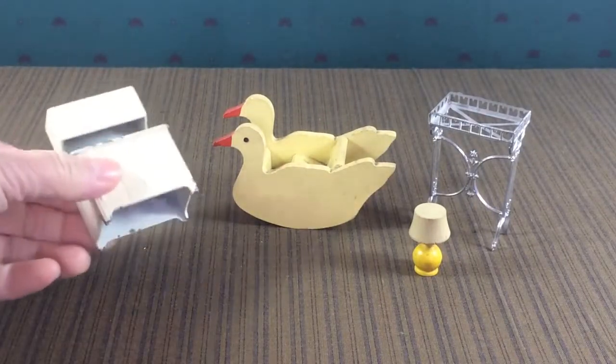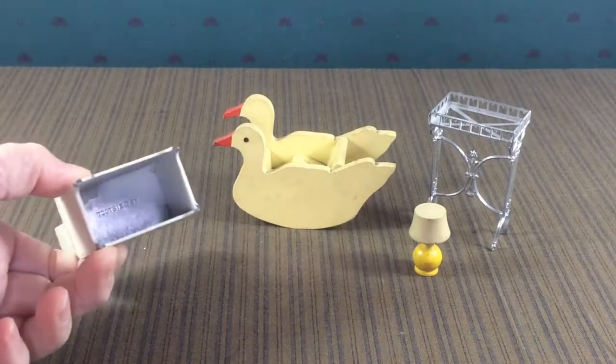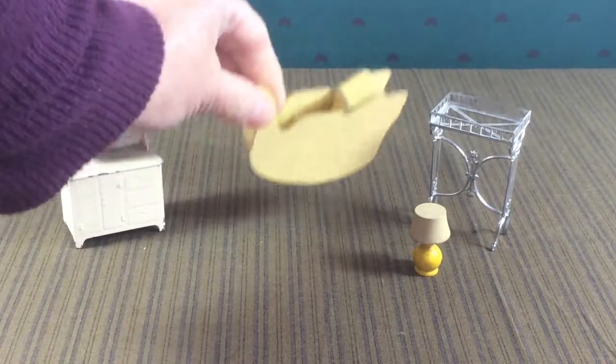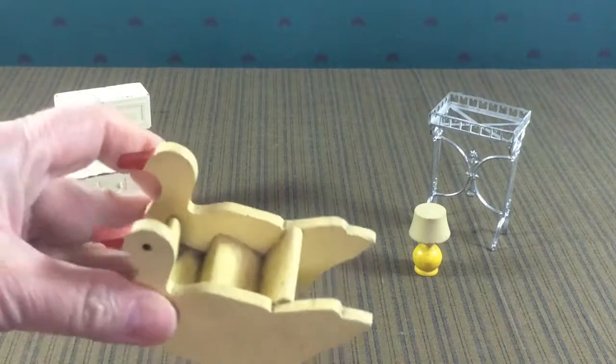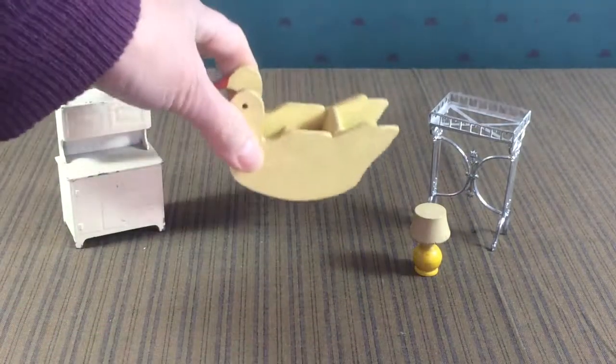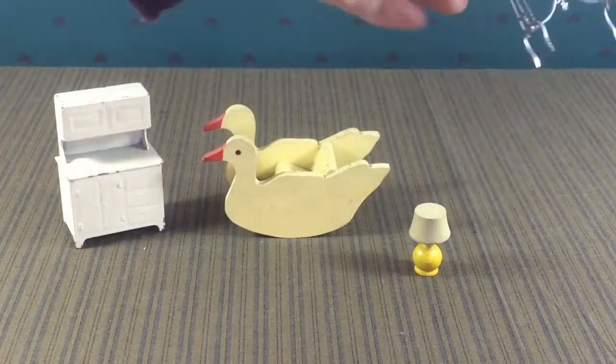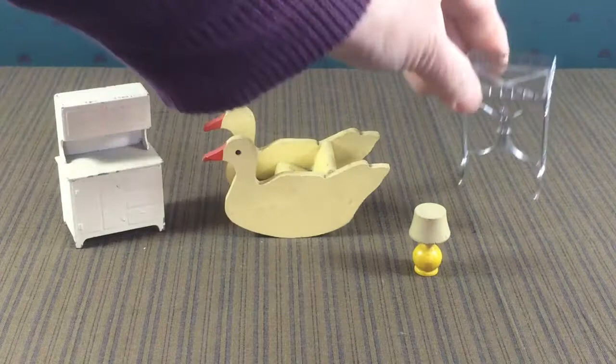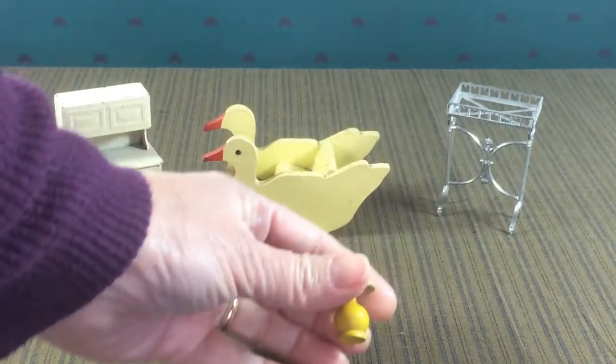Here's a few more odds and ends. This little cupboard is metal and it's marked Tootsie Toy underneath. This is just adorable, isn't it? I need to find a little doll to sit in that. I just think that's darling. And there's a metal plant stand and a little wooden lamp.